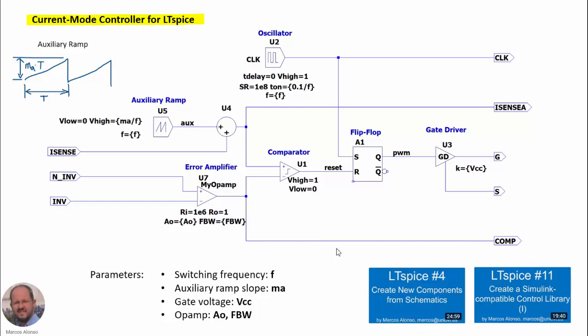You can see how to do this in LTSPICE number 4: how to create new components from schematics. Also, these components like the auxiliary ramp, the adder, the comparator, the oscillator, and the gate driver are from our Simulink-compatible control library. You can find information about this library in LTSPICE number 11 and subsequent videos.